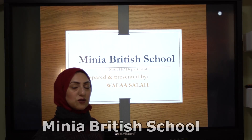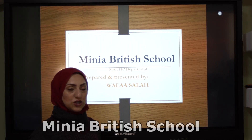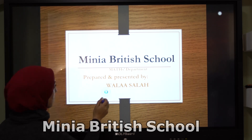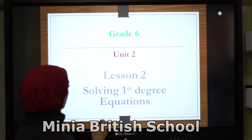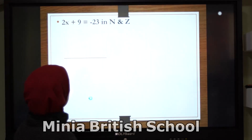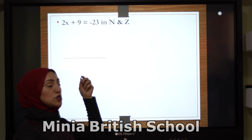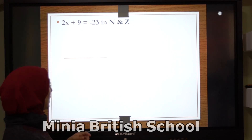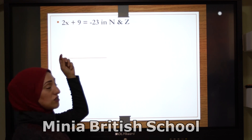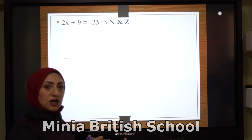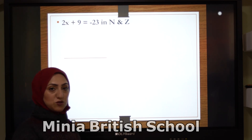Hello, greetings. Let's complete our unit. Here we have 2x plus 9 equals negative 23. I want the solution set in ℕ and ℤ. We agreed before that we have to get rid of any number beside the x — if it is addition and subtraction, first.